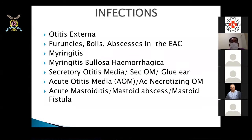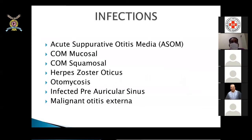The infections we normally see in practice include otitis externa, furuncles, boils and abscesses in the external canal, myringitis bullosa hemorrhagica, secretory otitis media, acute otitis media, acute necrotizing otitis media, acute mastoiditis, mastoid abscess and fistula, COM mucosal, COM squamosal, herpes zoster oticus, otomycosis, infected pre-auricular sinus, and malignant otitis externa.